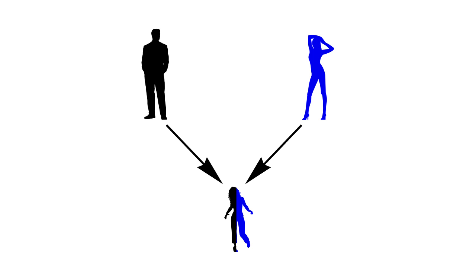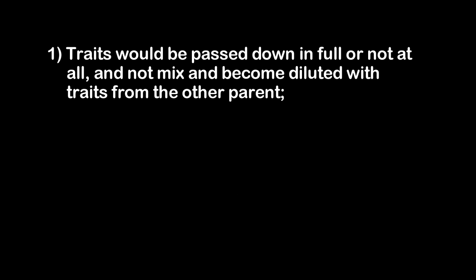The trait would either be passed on to the next generation in full, or not at all. Darwin's theory thus predicted three things. One, that traits would be passed down in full, or not at all, and not mix and become diluted with traits from the other parent.